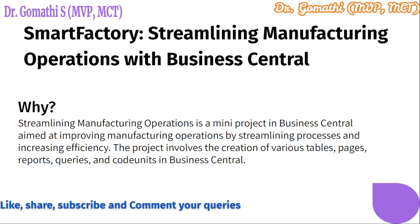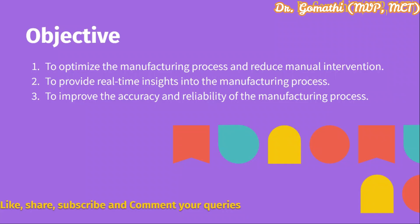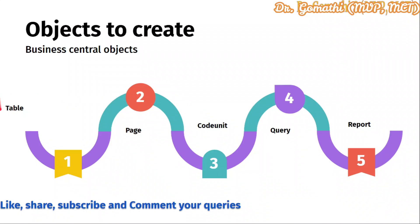Streamlining manufacturing operations is a mini project in Business Central aimed at improving the manufacturing process through automation and optimization. It involves the use of various Business Central objects such as tables, reports, pages, queries, and more to streamline the manufacturing process and reduce manual intervention. The objectives are to optimize the manufacturing process, provide real-time insights, and improve accuracy and reliability.